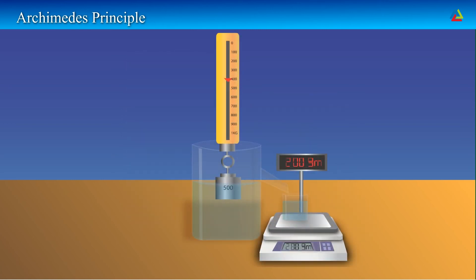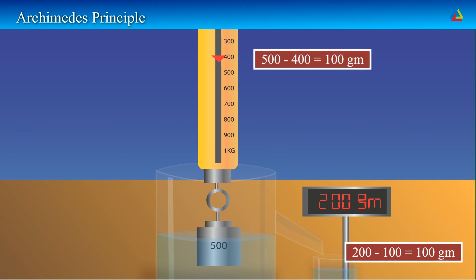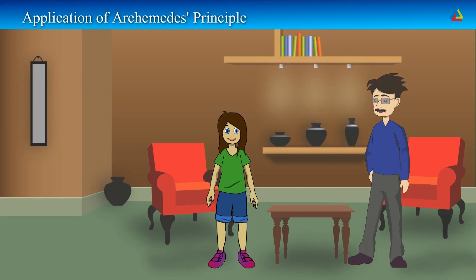Now dip the iron block completely into the water. The water overflows and collects in the small beaker. The reading on the spring balance shows 400 grams. The weight of the beaker is 200 grams. There is an apparent loss of weight of the iron block which is equal to 100 grams. The weight of the water collected in the beaker is equal to 100 grams. Hence, this shows that the difference of the weight of the iron block outside and inside the water is equal to the water displaced into the beaker. This verifies the Archimedes' principle.